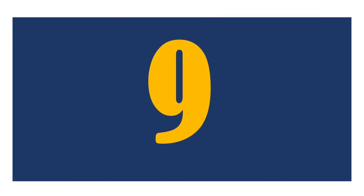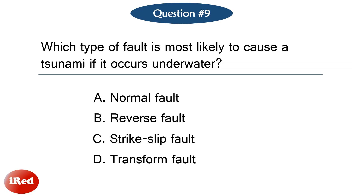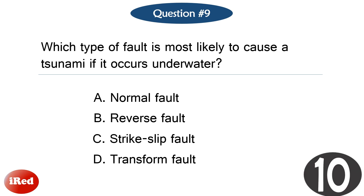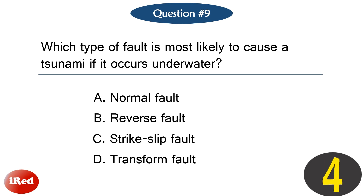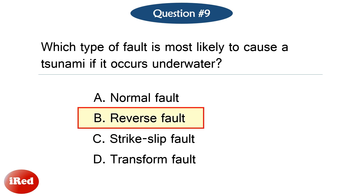Question number nine. Which type of fault is most likely to cause a tsunami if it occurs underwater? The correct answer is letter B: reverse fault.